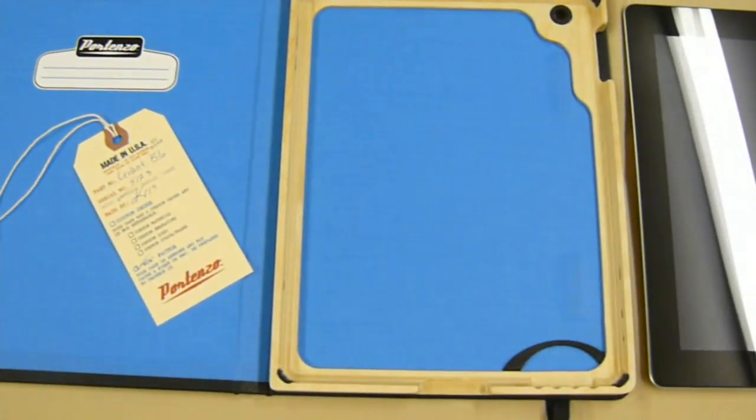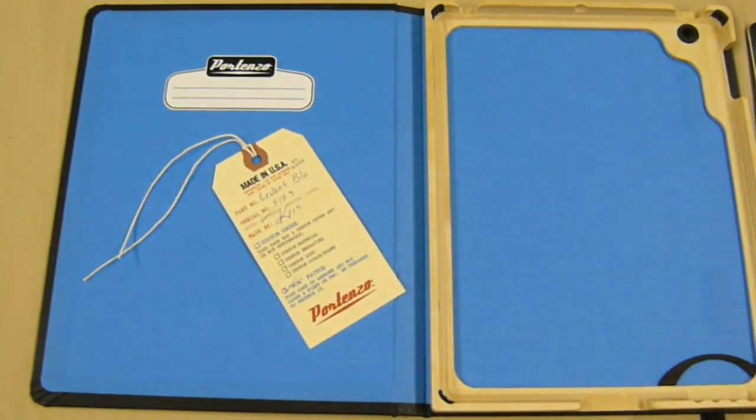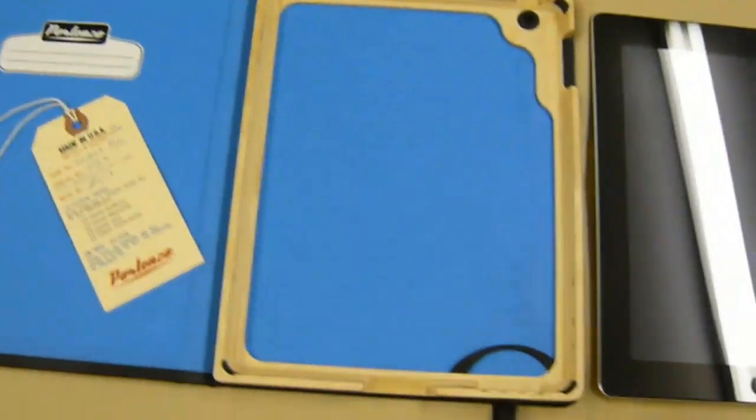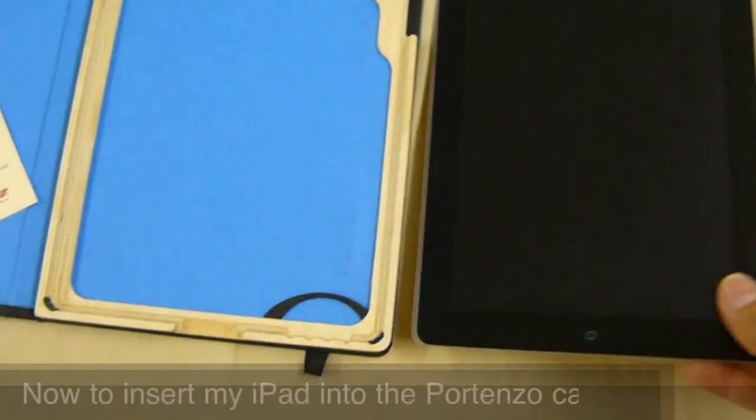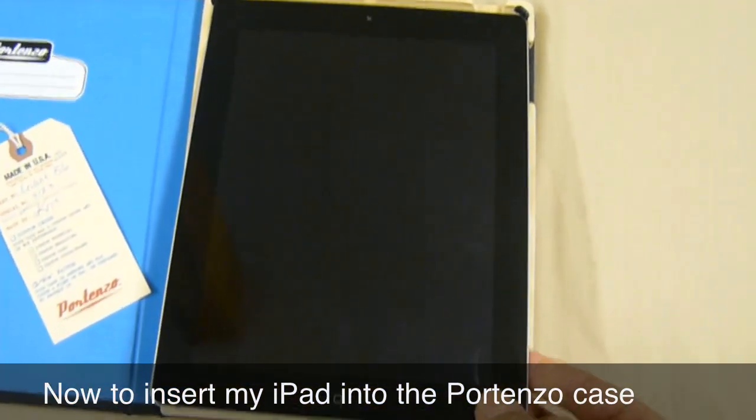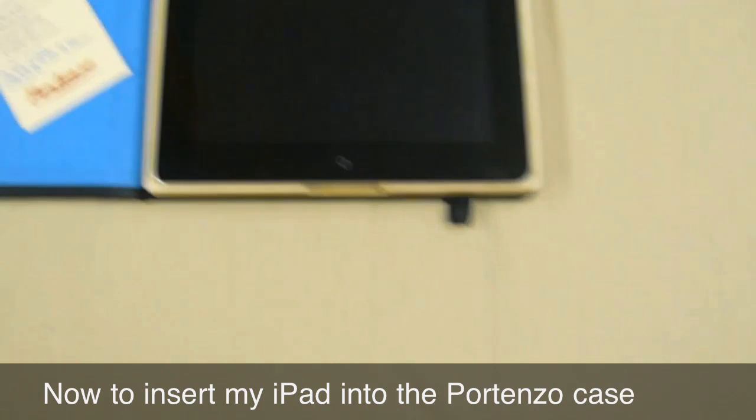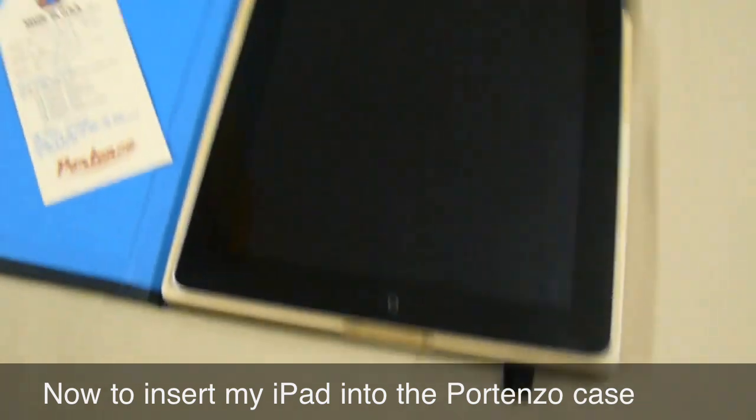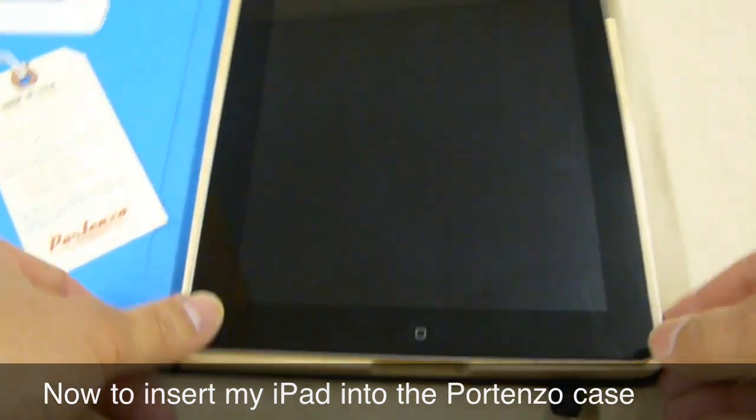Now we're going to go ahead and put my iPad 2 inside the Portenzo case and it goes in very easily. I'm going to do it one handed here. All you do is just insert it as I'm doing here and then you're just going to press the bottom two corners and that's all it's going to take to insert the iPad 2 inside the Portenzo case.